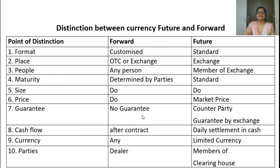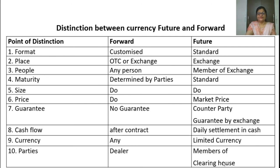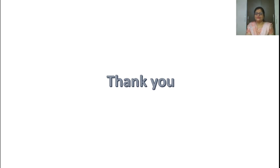Guarantee — in forward contracts there is no guarantee, only two parties; in futures, guarantee is provided by the exchange. Cash flow — in forwards it is done after maturity; in futures, cash flow is done every day with daily settlement of profit or loss to each party. Currency — forwards can be done for any currency; futures are offered in limited currencies. Parties — in forwards they are dealers; in futures, they are members of the clearing house. Today we have discussed futures and the difference between futures and forwards. We will take up more financial derivatives in the next class. Till then, take care. Thank you.